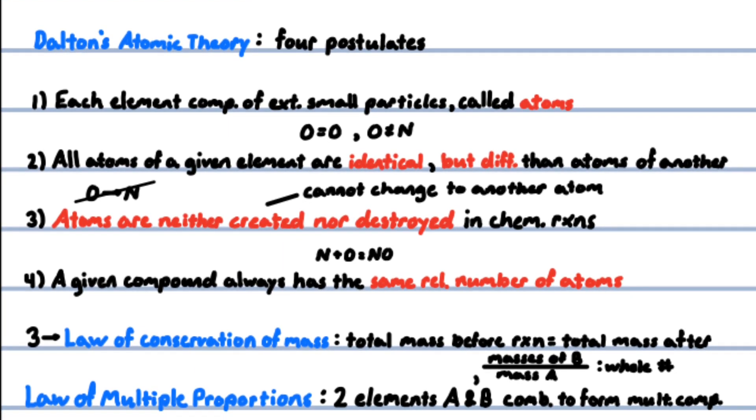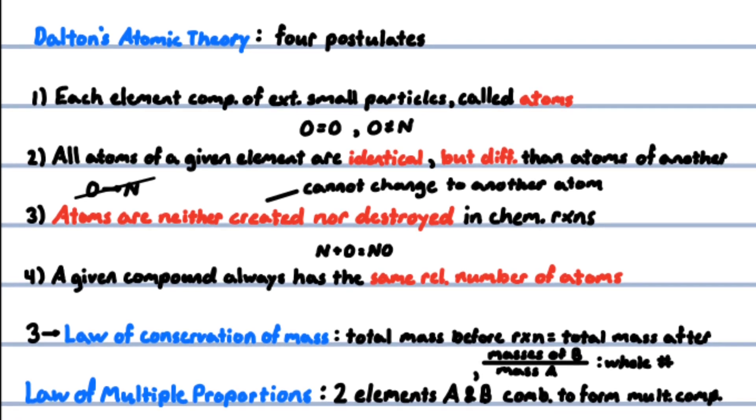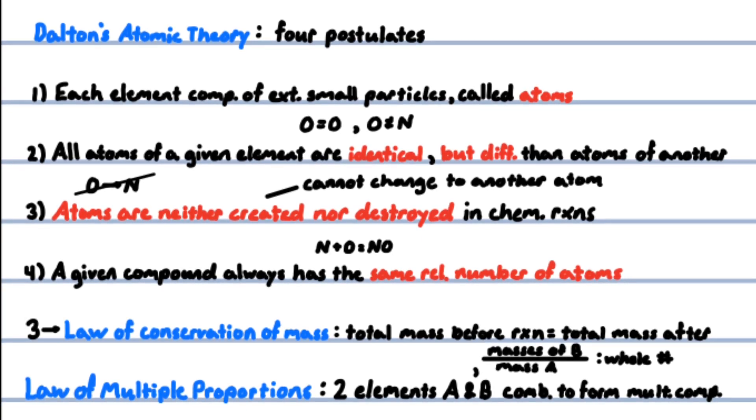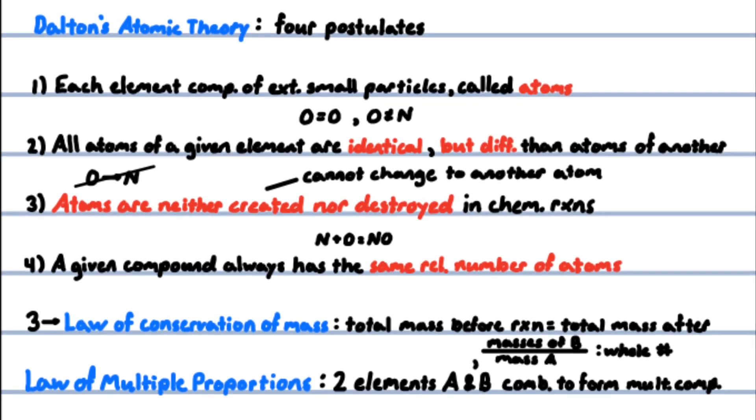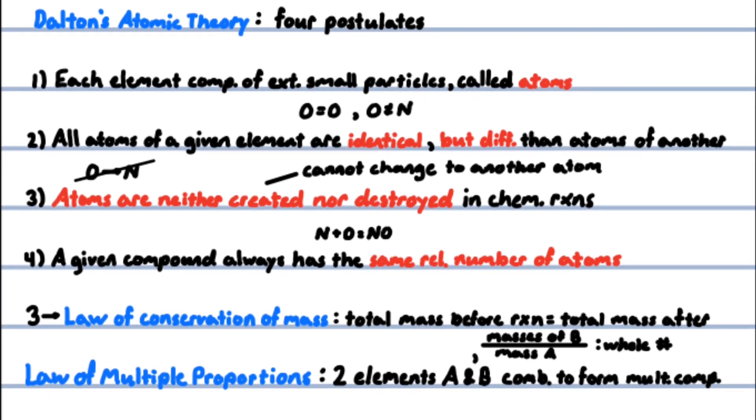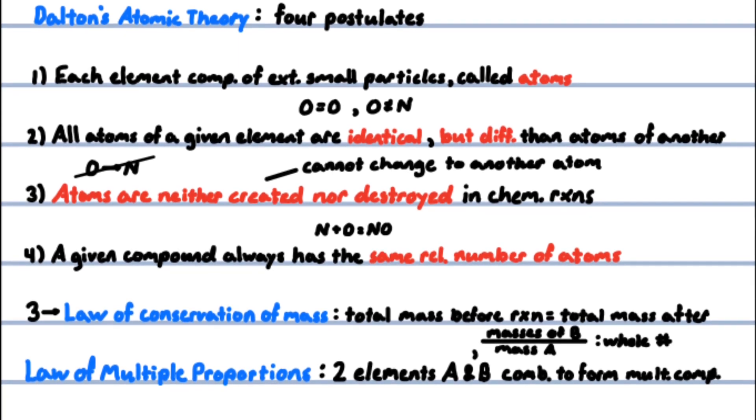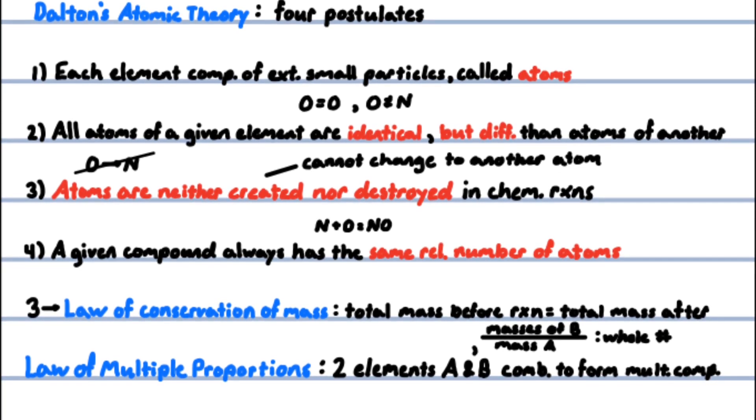Postulate three helped explain the law of conservation of mass, which states the total mass of materials present after a chemical reaction is the same as the total mass present before the reaction. This theory was used to deduce the law of multiple proportions, which states that if two elements A and B combine to form more than one compound, the masses of B that can combine with a given mass of A are in the ratio of small whole numbers.